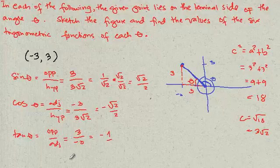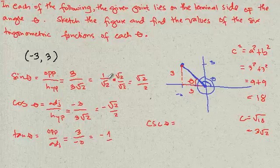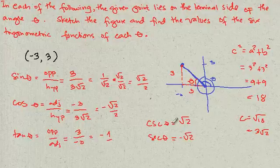And then, the reciprocals of this one. Reciprocal of sine is cosecant, right? Cosecant theta will just be the reciprocal, 2 over square root of 2. So that will just be 1 over square root of 2, simply square root of 2. This one will just become secant theta. Reciprocal of this is simply negative square root of 2. And then, you have tangent will have cotangent theta. The reciprocal of negative 1 will just be negative 1.